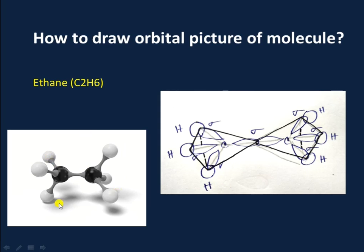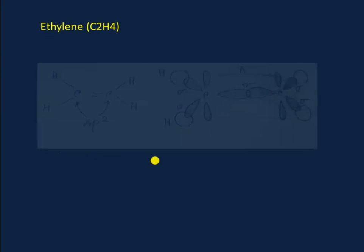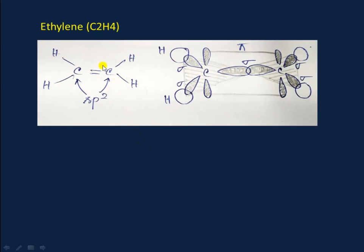This is the carbon-carbon sigma bond and these are the six carbon-hydrogen sigma bonds. This is the 3D image of ethane. Let's understand the orbital picture of ethylene, that is C2H4. In ethylene, both carbon atoms are sp2 hybridized and are oriented in a trigonal planar shape. One sp2 hybridized orbital of each carbon atom overlaps head to head to form the carbon-carbon sigma bond.